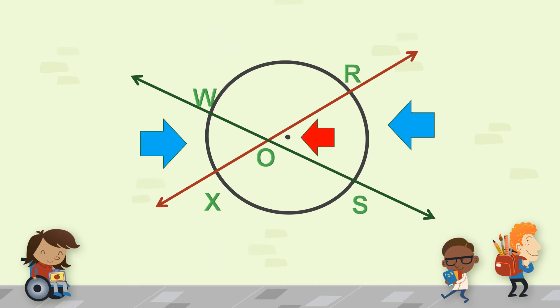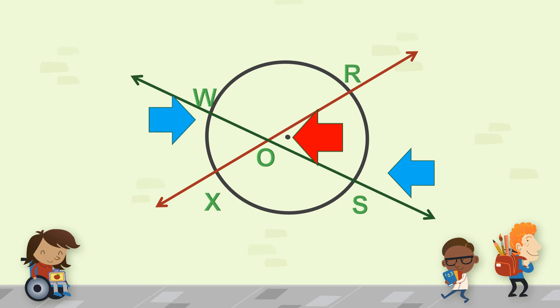Next, if you're looking for angle ROS — that is this angle here — take the arc behind it, arc RS, and the arc in front of it, arc WX, add the measures together and then divide by two.